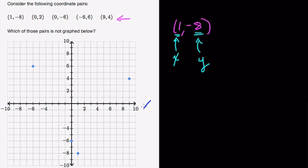In the graph itself, your x-axis is the horizontal axis, and your y-axis is the vertical axis. They always meet at the origin, which is this point right here, 0, 0.